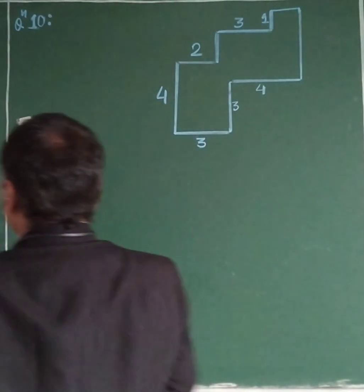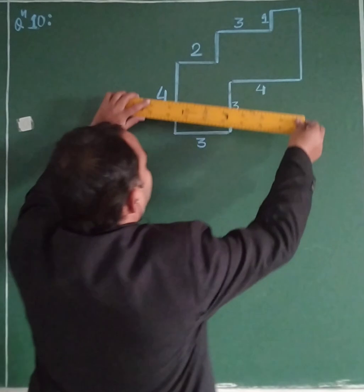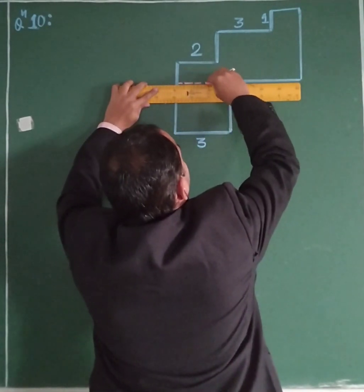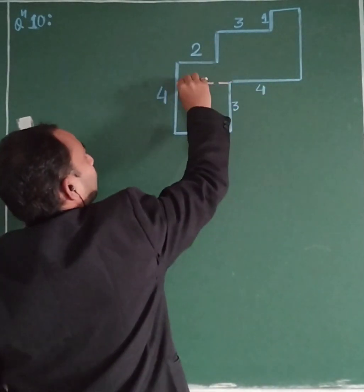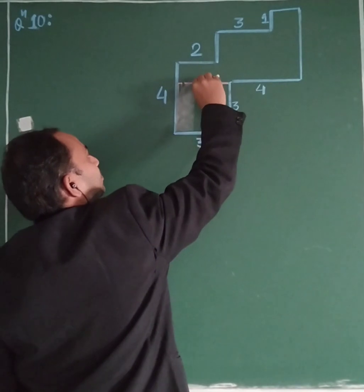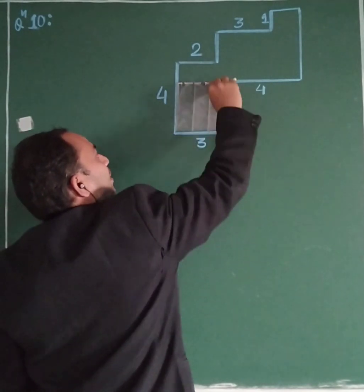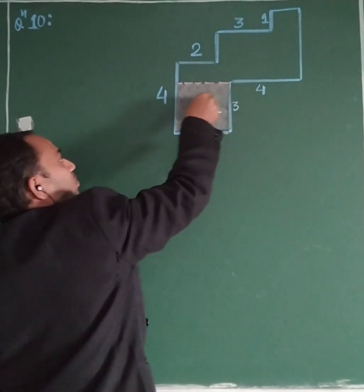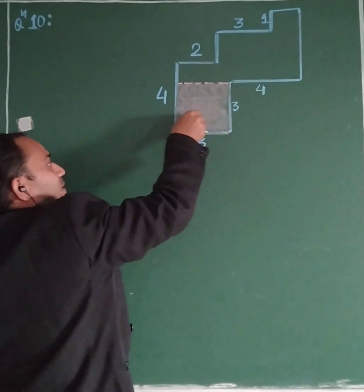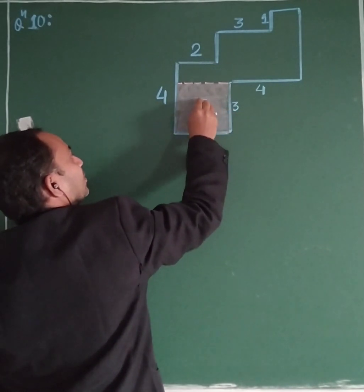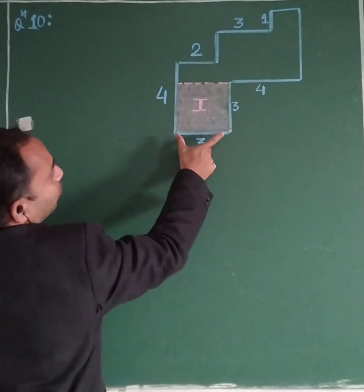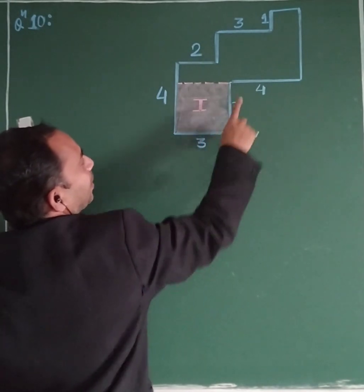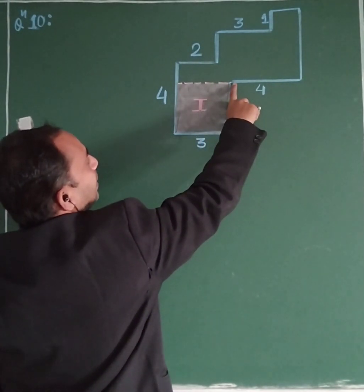First, we will convert this figure into either a rectangle or square by plotting a line. I'll just draw a line. Can we focus on this? This shape here is a rectangle or square. Looking at this pink color region — if I name it — you can see this side and this side are both 3 centimeters. So this is a square.